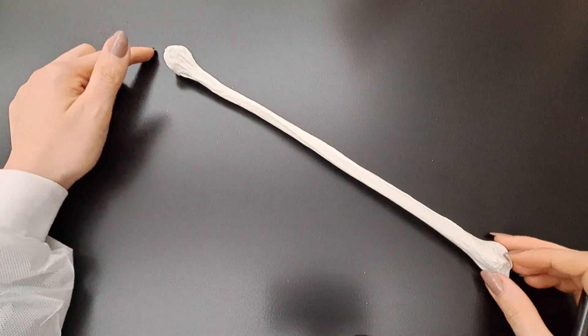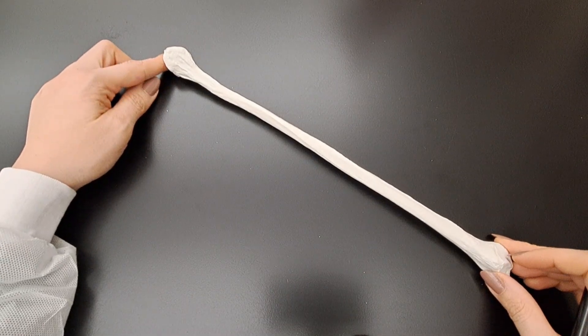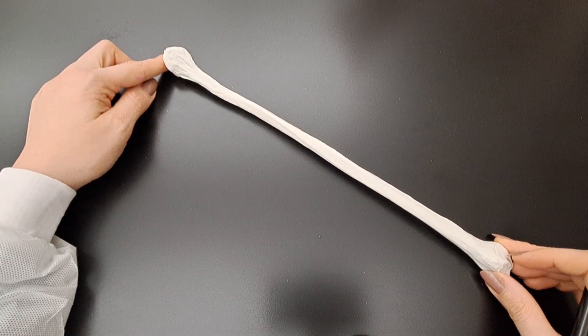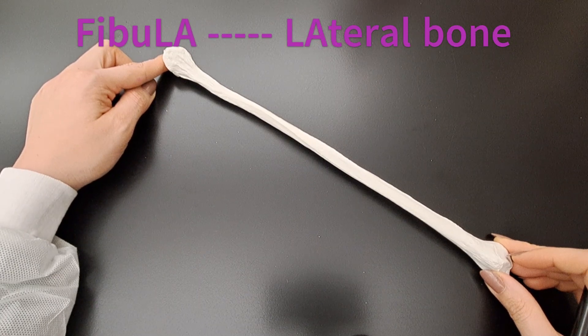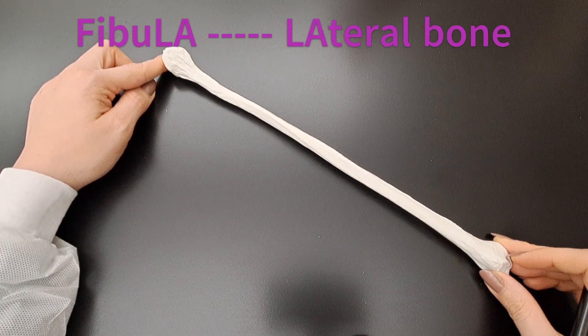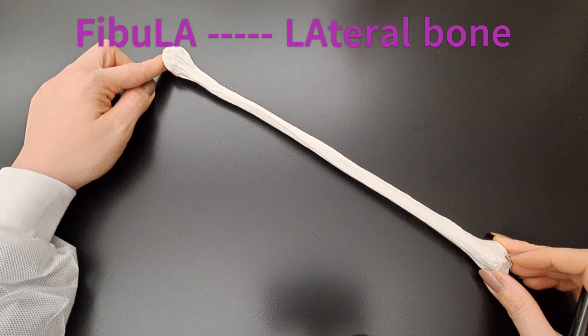The fibula is one of the two bones of the leg. It is the lateral bone of the leg. A way to remember that the word fibula ends with LA, the word lateral starts with LA.